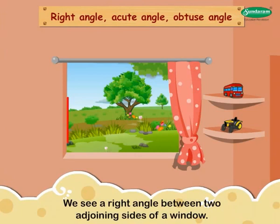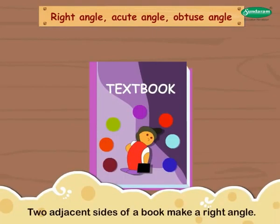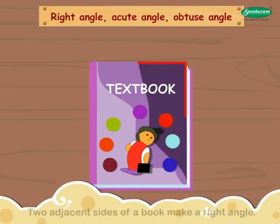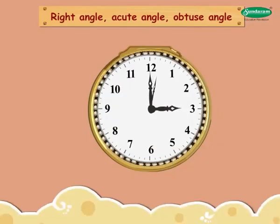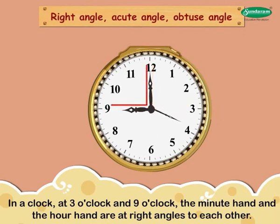We see a right angle between two adjoining sides of a window. Two adjacent sides of a book make a right angle. Have you seen a clock? In a clock, at 3 o'clock and 9 o'clock, the minute hand and the hour hand are at right angles to each other.